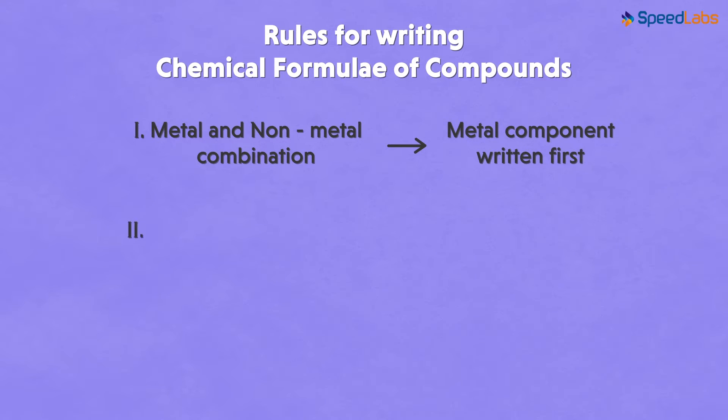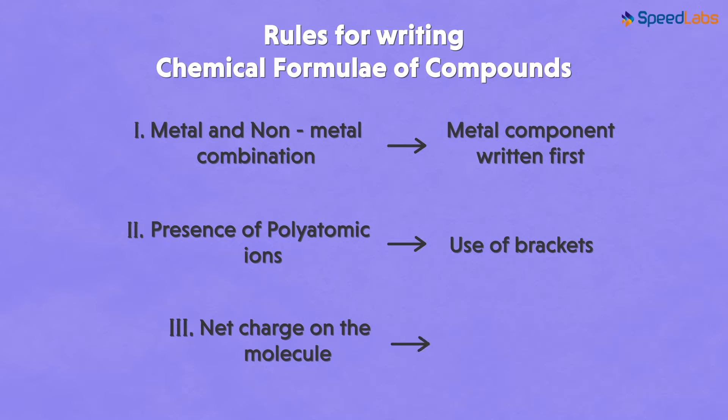Secondly, when we have polyatomic ions in the compound, then they are represented using brackets. And lastly, according to the valencies, the net charge on a complete molecule must be balanced.